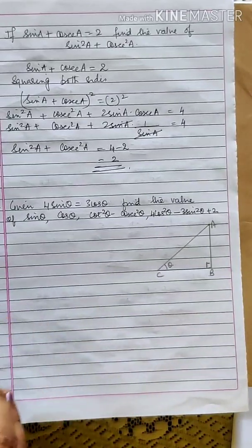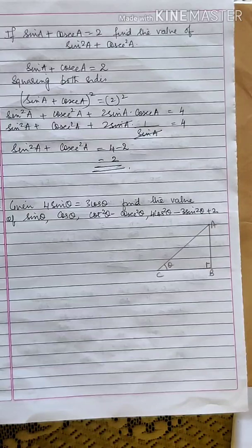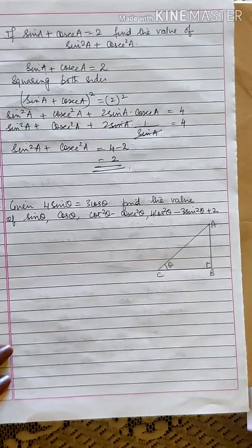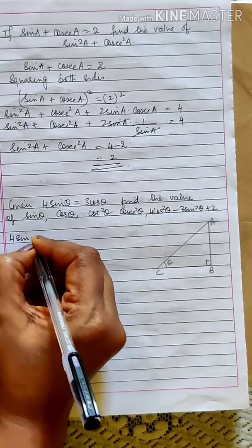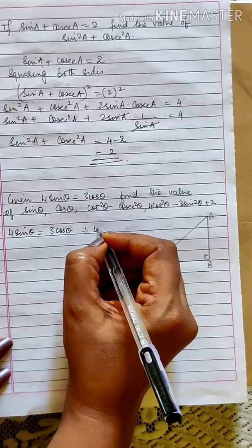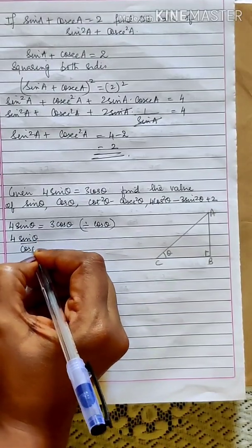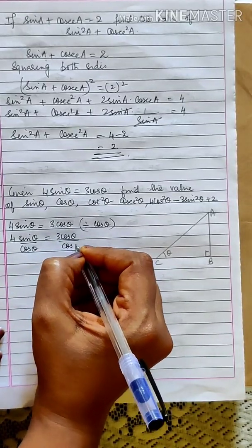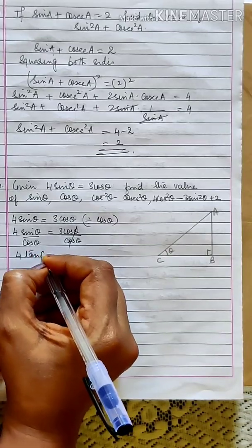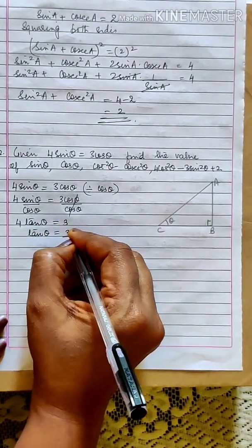Here it is 4 sin theta equals 3 cos theta. You have to find the value of sin theta, cos theta, cot square theta minus cosecant square theta, and 4 cos square theta minus 3 sin square theta plus 2. Dividing the whole expression by cos theta: 4 sin theta by cos theta equals 3. Since sin theta by cos theta is tan theta, you get 4 tan theta equals 3, or tan theta equals 3 by 4.